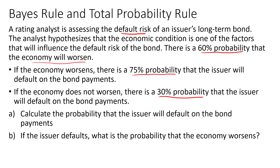Question A: Calculate the probability that the issuer will default on the bond payments. And Question B: If the issuer defaults, what is the probability that the economy worsens?